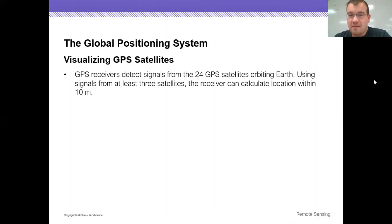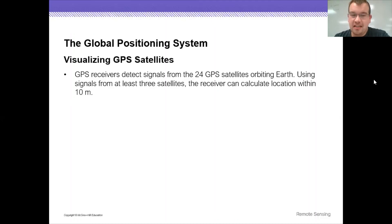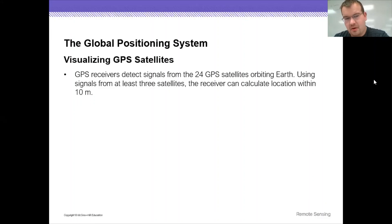GPS receivers detect signals from the 24 GPS satellites orbiting Earth. Using signals from at least three satellites, the receiver can calculate location within 10 meters.